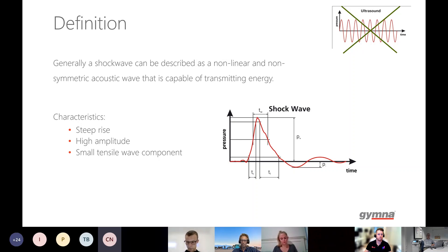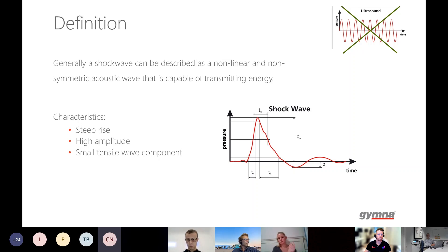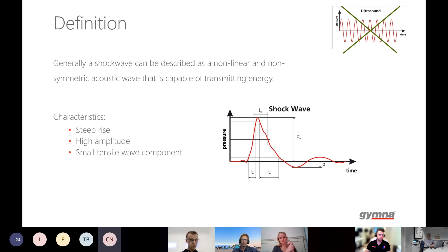As always, when there is a discovery of the potential of physical things — electricity, whatever — you can ask what benefits there can be for mankind and in medicinal use especially. So the characteristics are: steep rise, high amplitude, and a small tensile wave component.